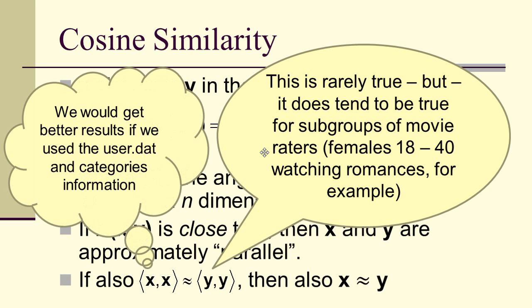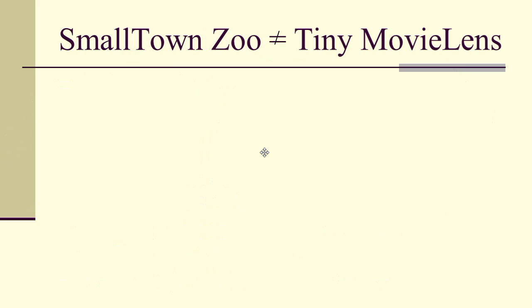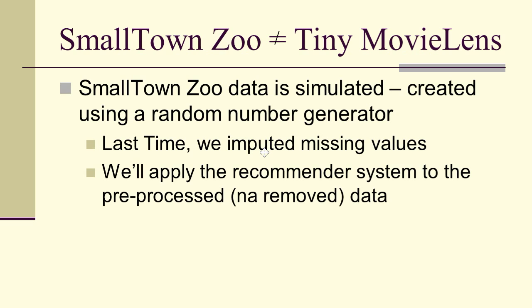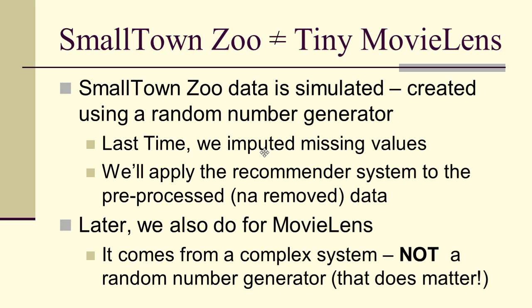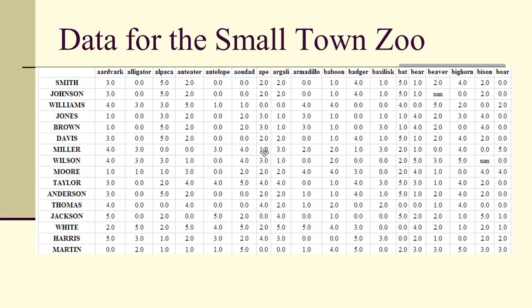It's unfortunate that we're not going to use the users.dat and categories information — it would be a better recommender if we did. The Small Town Zoo data, even though it's the one we're going to play with, is not the MovieLens data because it's simulated using a random number generator. Last time we imputed missing values into our Small Town data and we'll apply the recommender system to this pre-processed data where we removed NAs using the imputation technique. Later we'll do the same for MovieLens, which comes from a complex system, not a random number generator — and as we'll see, that does matter.